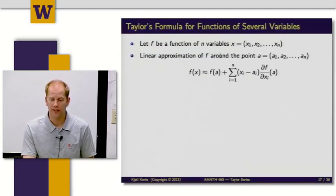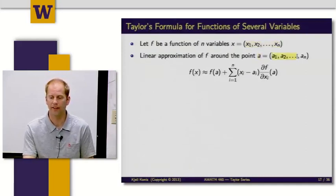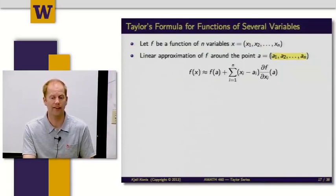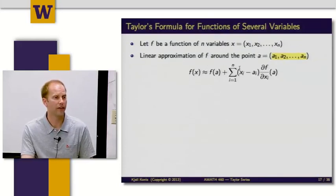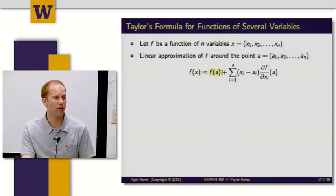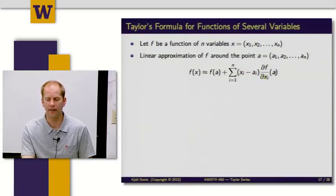Now, a linear approximation of f around a point a. So a has to live in the same space as x. If x has n components, then a has to have n components as well. So if it was a point in the plane, you'd need an x-coordinate and a y-coordinate for both x and a. The linear approximation around the point a looks a lot like the Taylor polynomial for a function of a single variable: f of a, where I know the function value, plus a linear approximation — for each direction, the distance in that direction, xi minus a, times the partial derivative of f with respect to that direction, evaluated at the point a.